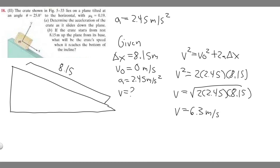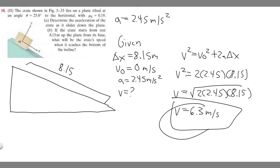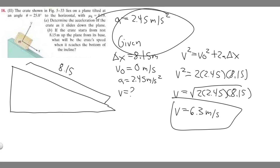The result is approximately 6.3 meters per second. So the crate's speed when it reaches the bottom of the incline is 6.3 meters per second. To summarize: the answer to part A is acceleration = 2.45 m/s², and the answer to part B is speed = 6.3 m/s.